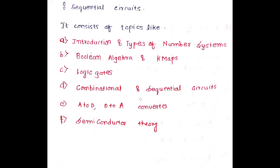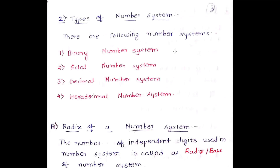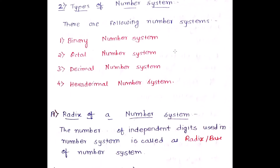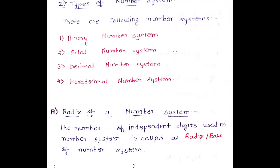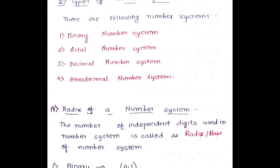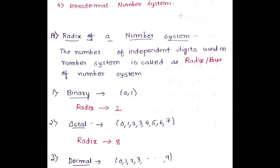We'll be learning topics one after the other, beginning with introduction and types of the number system. Notes are also present in the description box of this video, so do not forget to download and make use of them. Now, what are the types of number systems? We have the binary number system, the octal number system, the decimal number system, and the hexadecimal number system.